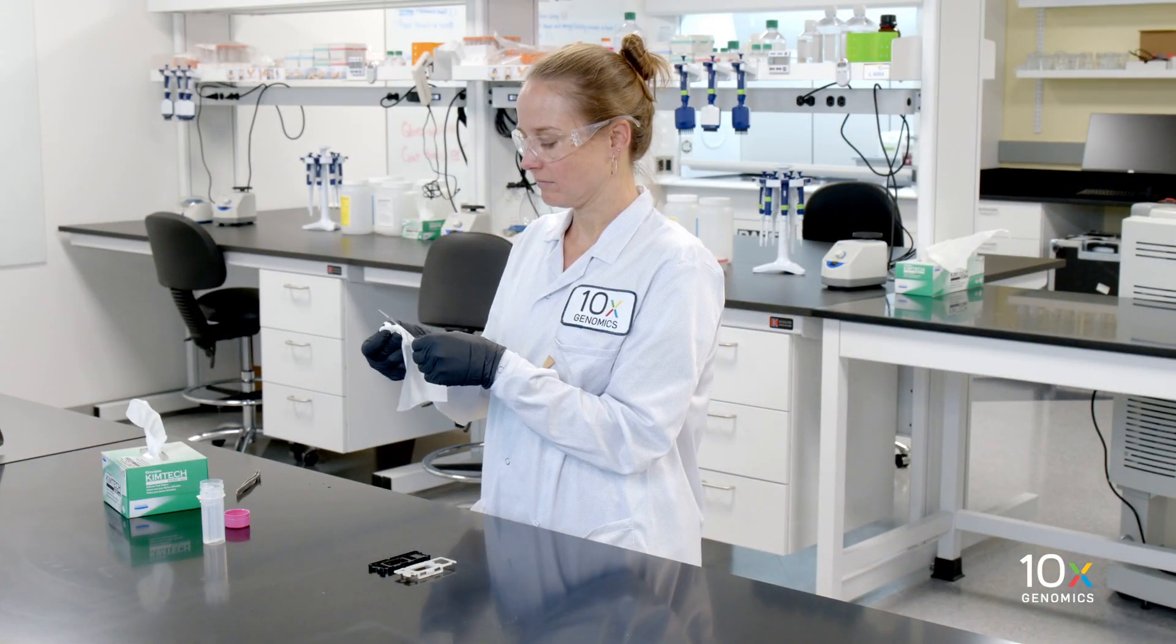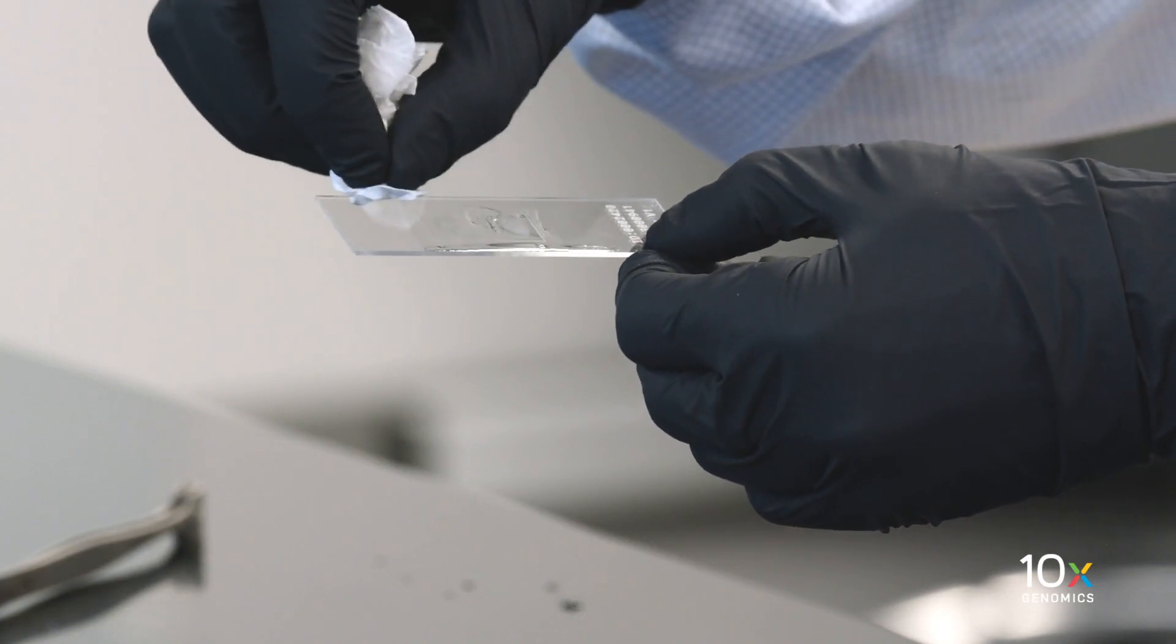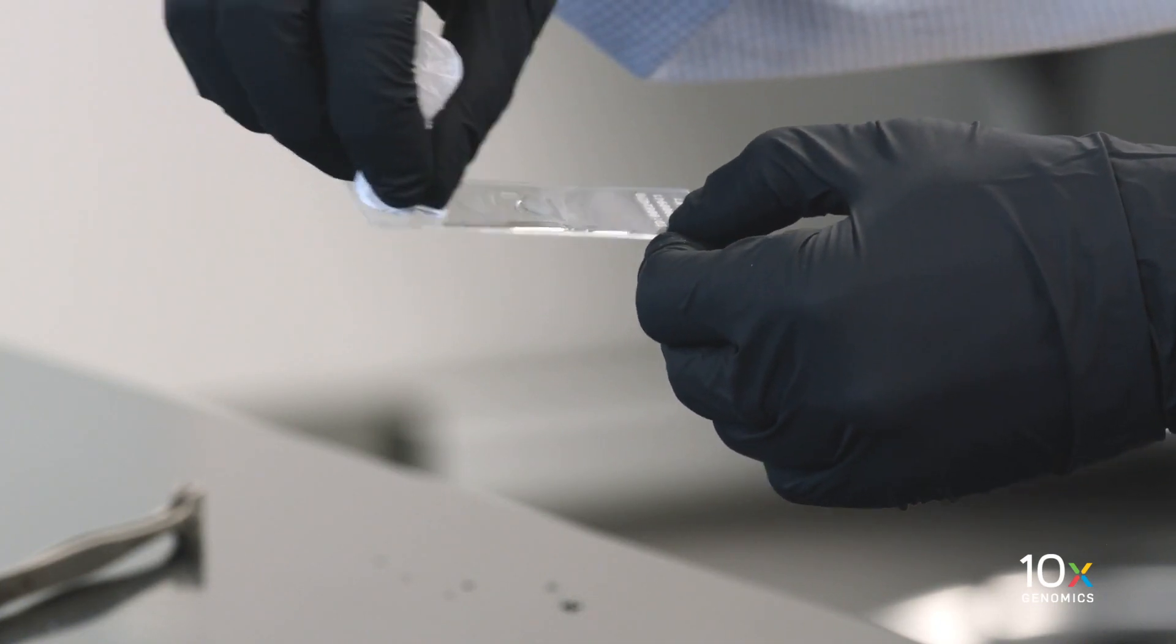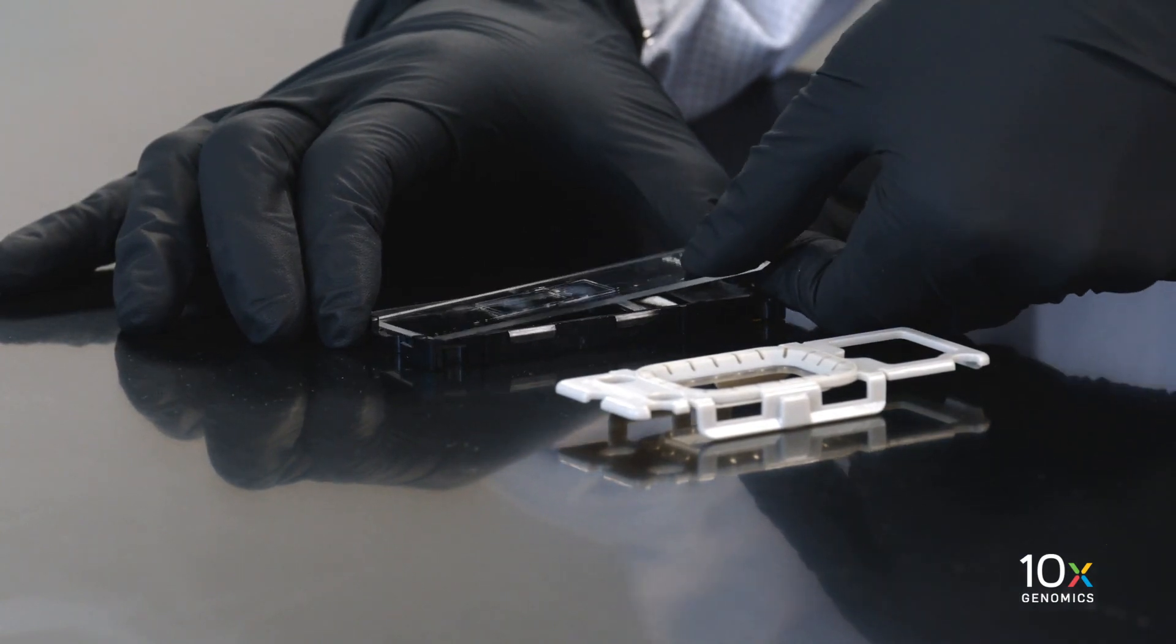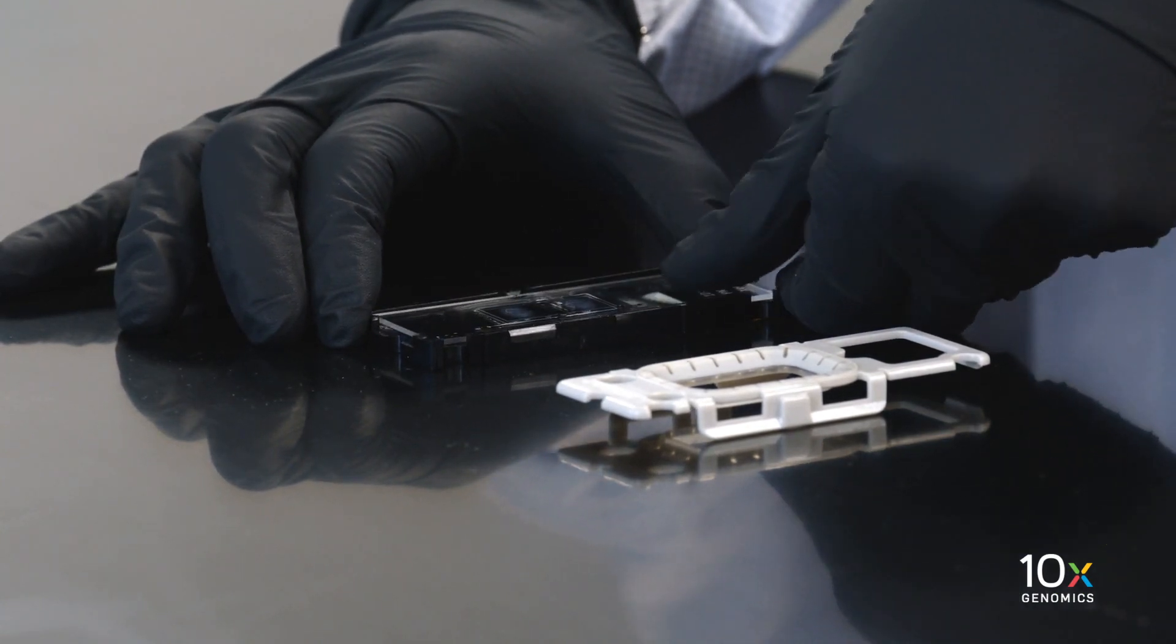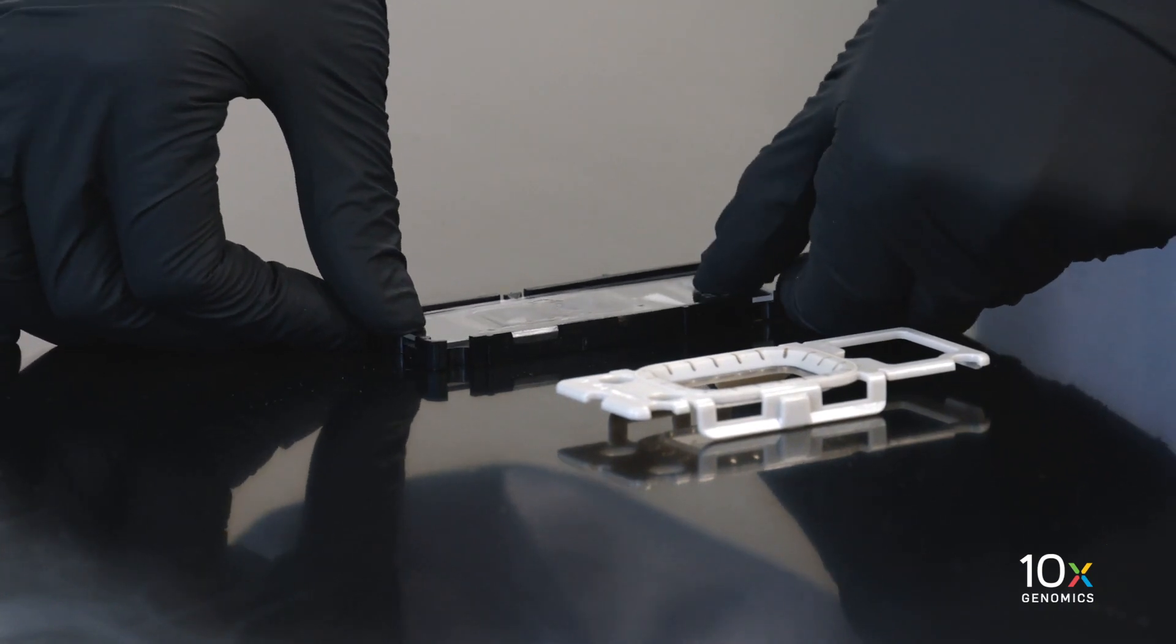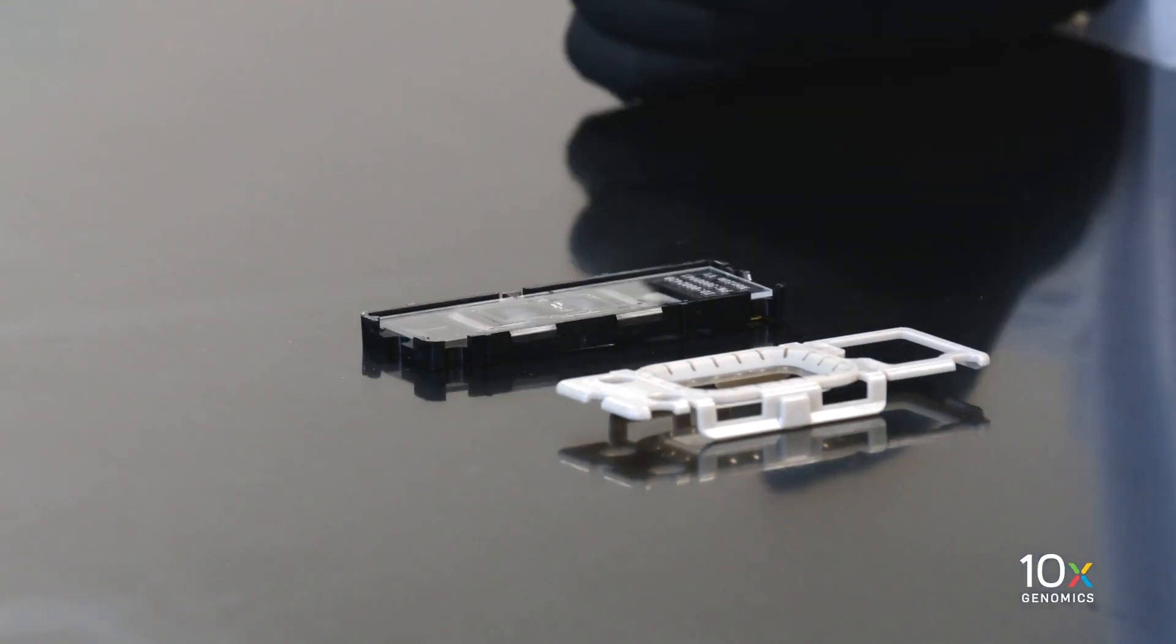Wipe the slide dry outside of the sample area with a laboratory wipe. Place the Xenium slide with the tissue side facing upwards into the bottom half of the cassette. Ensure the label is facing toward the bottom of the cassette. Press the slide down into the grooves of the bottom half of the cassette until it sits firmly in place.